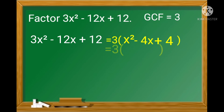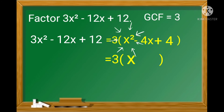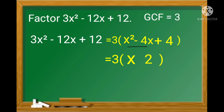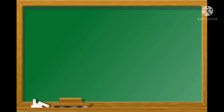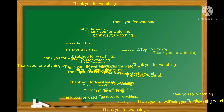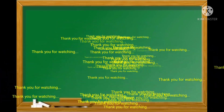To continue, bring down the 3. The square root of x² is x, and the square root of 4 is 2. Copy the sign of the middle term, which is negative, and raise the binomial to the second power. The final factored form is 3(x − 2)². That ends our discussion on perfect square trinomial.